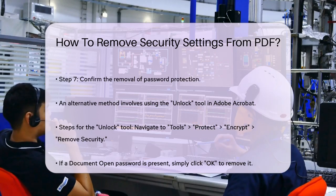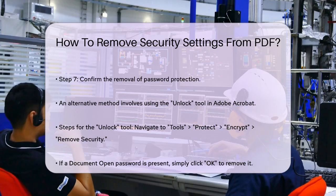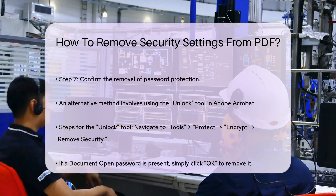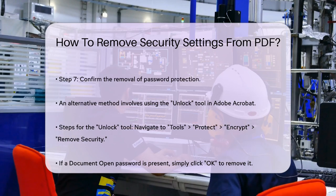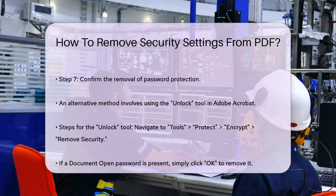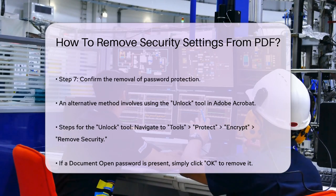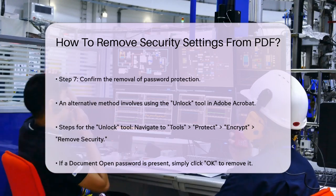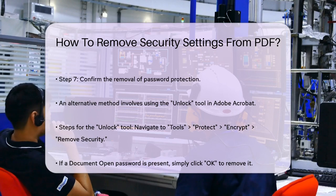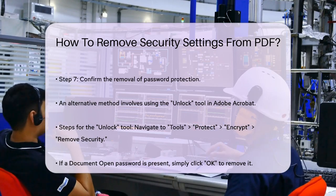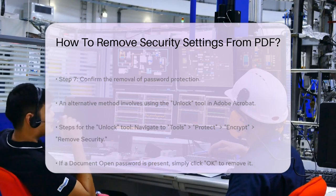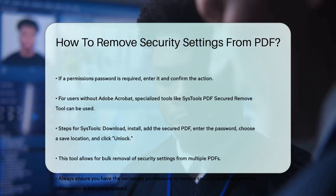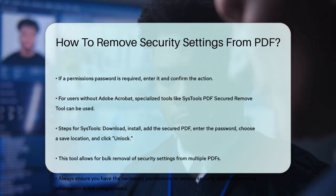If you don't have Adobe Acrobat or prefer a different solution, you can use specialized tools like SysTools PDF Secured Remove Tool. Download and install the SysTools PDF Secured Remove Tool on your system. Add the secured PDF file to the tool. Enter the correct password under the password section. Choose the destination path and save the file. Click the unlock button to remove the security settings from the PDF. This tool allows you to bulk remove security from multiple PDFs at once and is a cost-effective alternative to Adobe Acrobat.